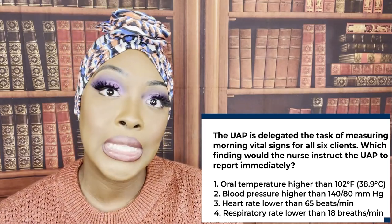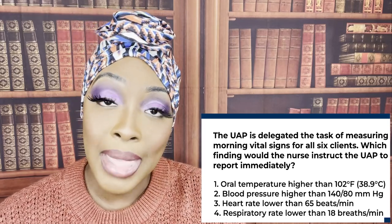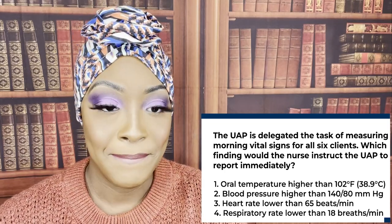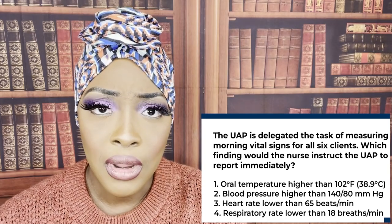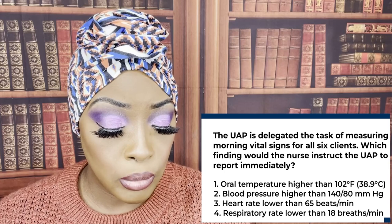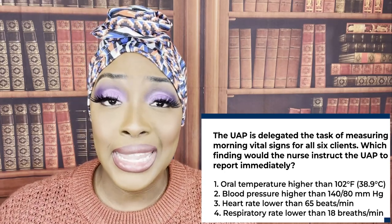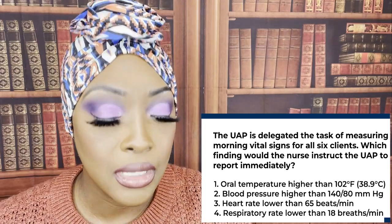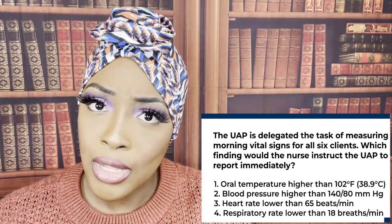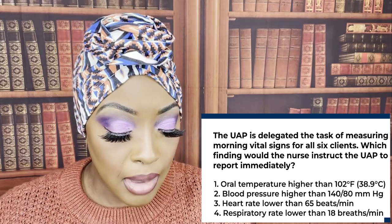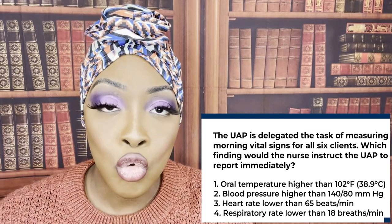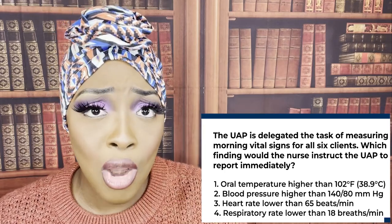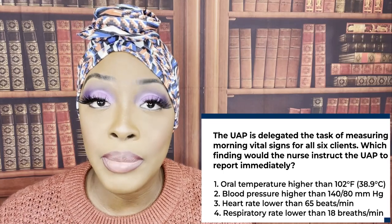Whenever you get a test question about what patient to assess first, you have to think of Maslow's hierarchy of needs — what is going to kill or harm your patient the fastest? It's going to be that temperature, that fever. Choice two, blood pressure higher than 140 over 80, is still within that upper range of normal — 90/60 to 140/90. Choice three, heart rate lower than 65, normal is 60 to 100. Choice four, respiratory rate lower than 18, normal is 12 to 20. The only one that is outside parameters and will harm the patient fastest is that temperature of 102. What are we concerned about? Infection.